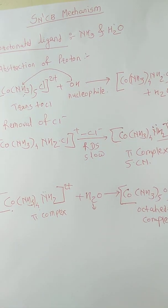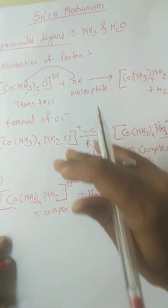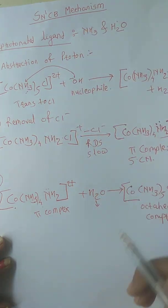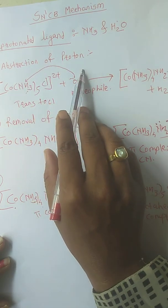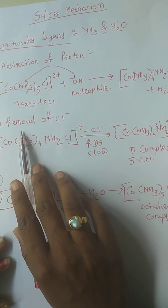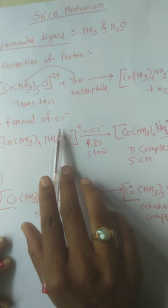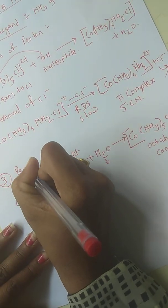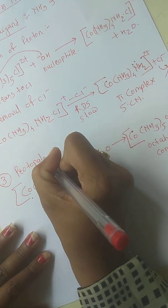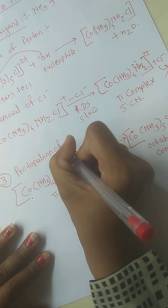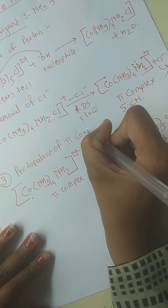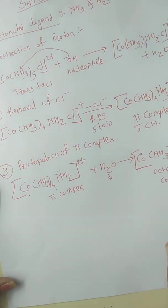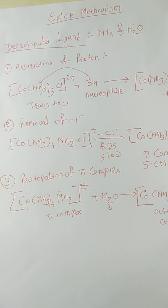This is our three-step mechanism of SN1CB. First step is abstraction of proton. Second step is removal of Cl⁻. Third step is the protonation of the pi complex. So students, you are clear with this mechanism.